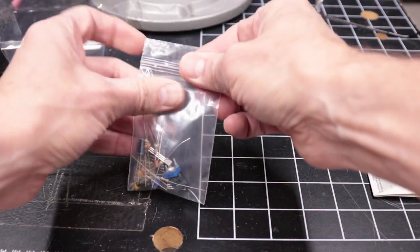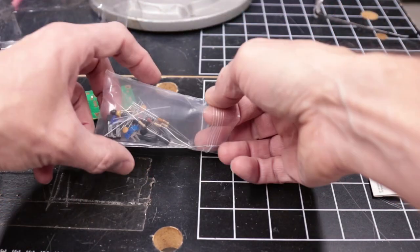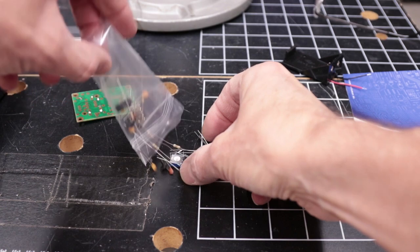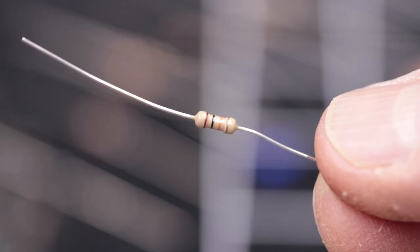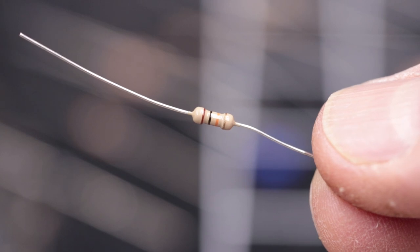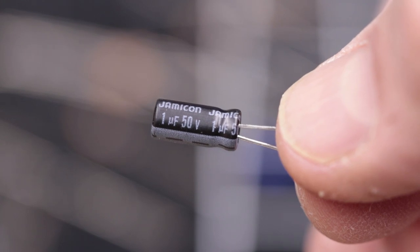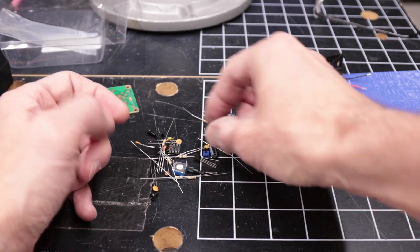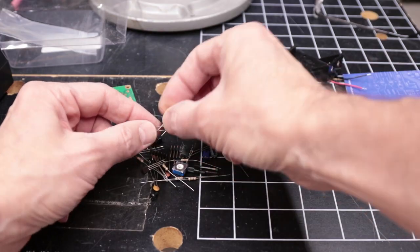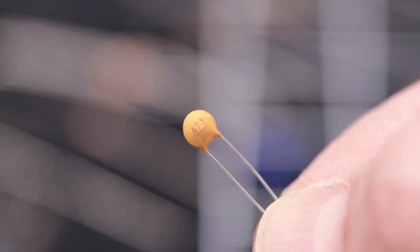The first thing you want to do is dump the parts out and separate them into their different types of components. These are resistors and they have color bands on them to identify them. These can-looking things are electrolytic capacitors. These flat disk-looking things are regular capacitors, non-electrolytic.